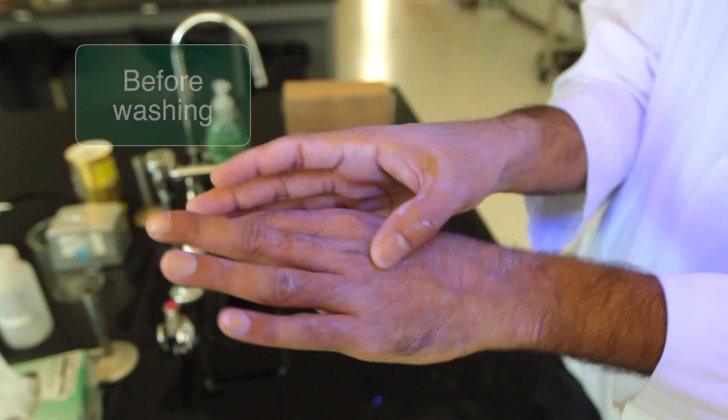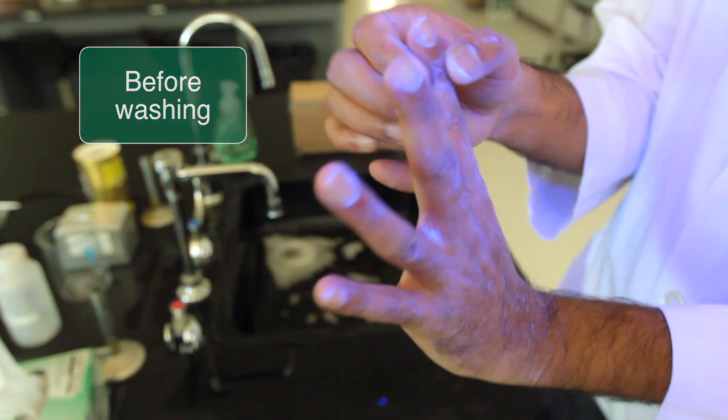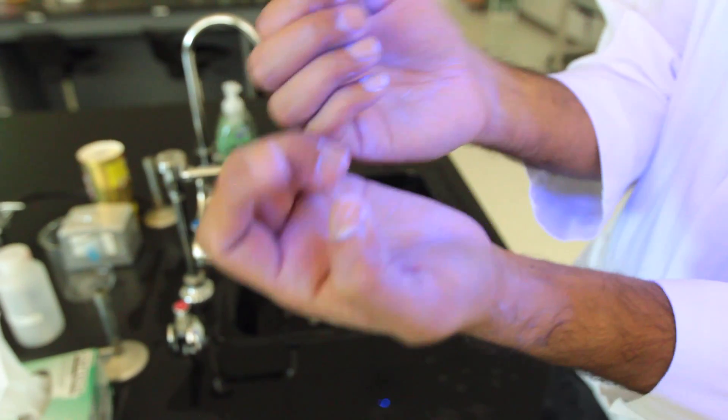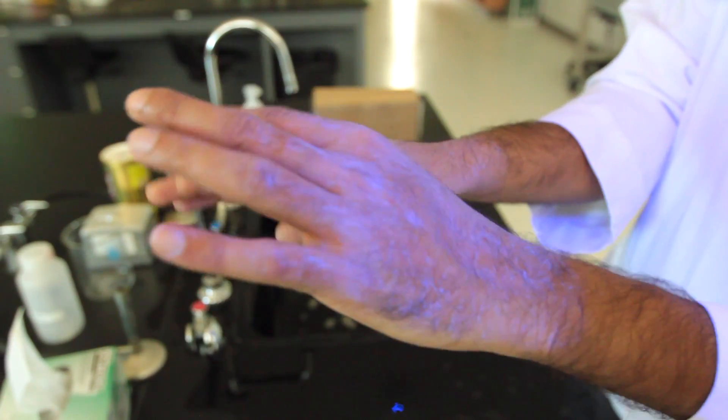So before washing my hands, I put some Glo Germ on and this is what your hands will look like. The bacteria might hang around on your hands and between your fingers.